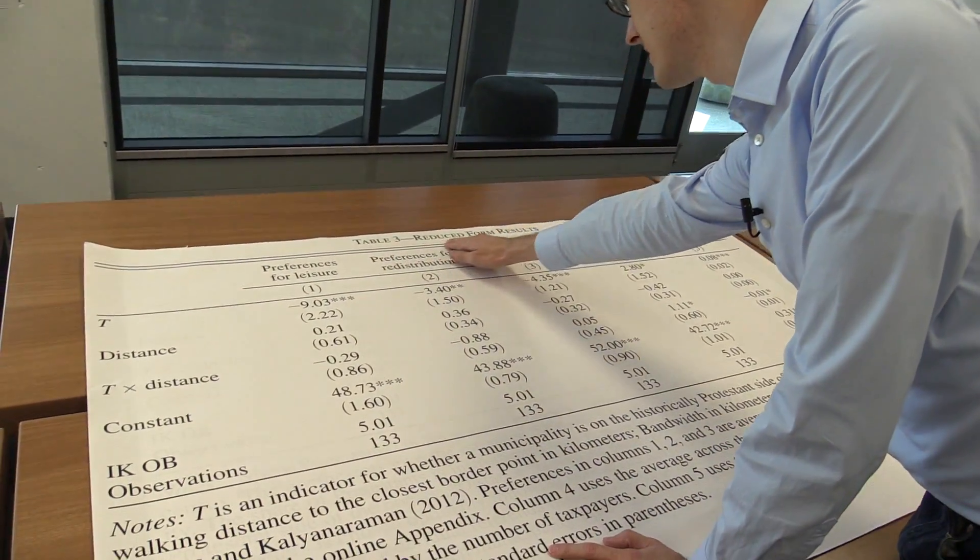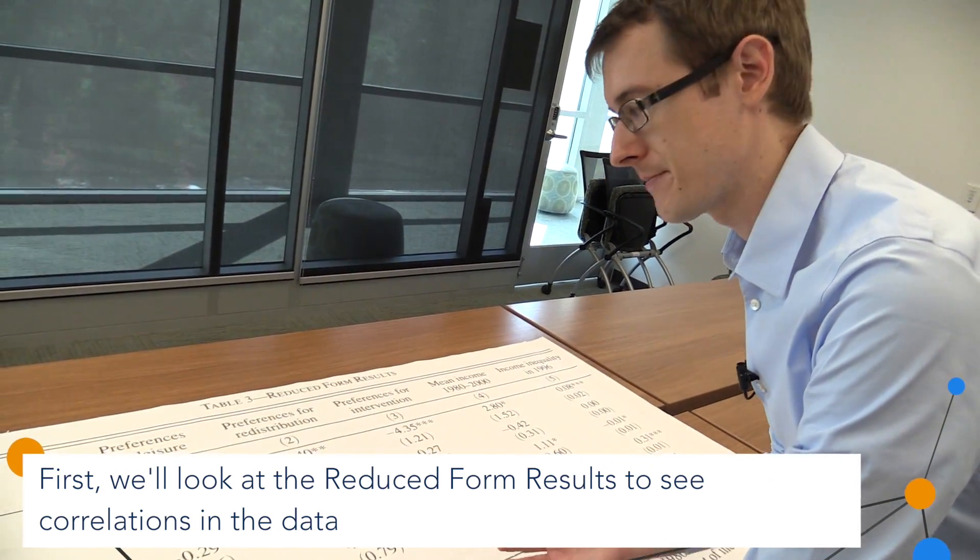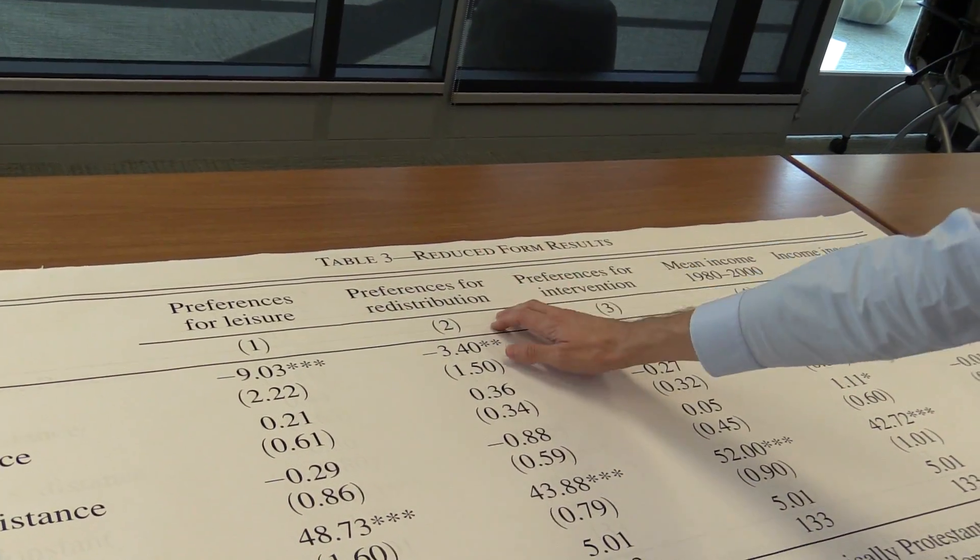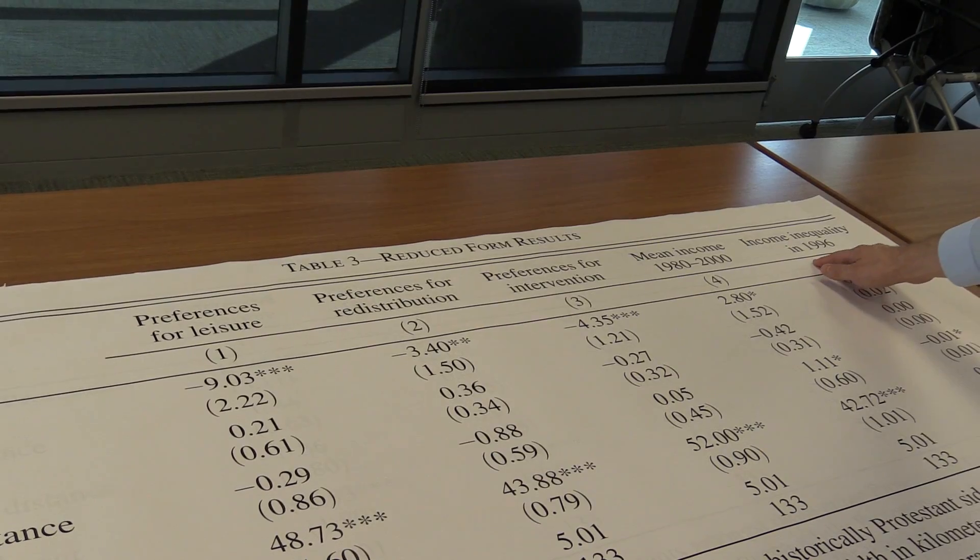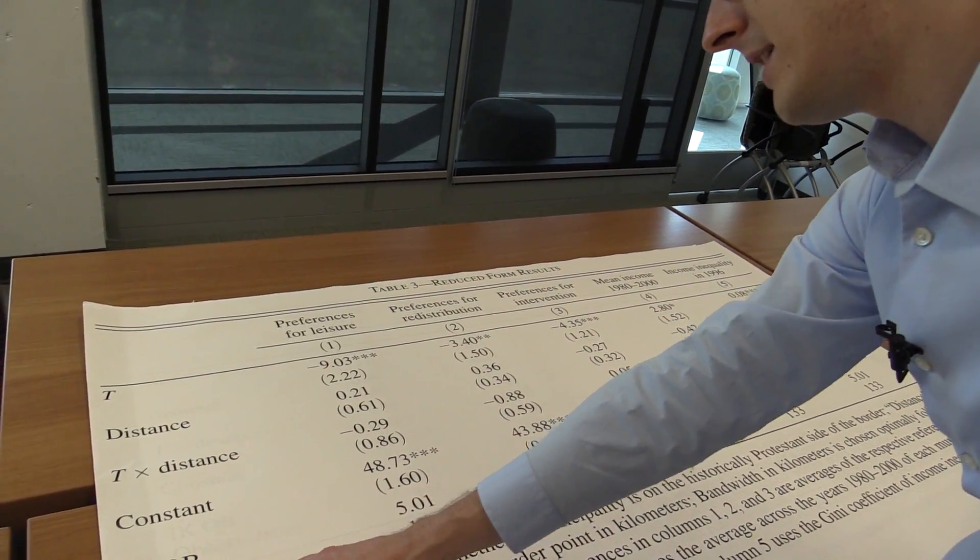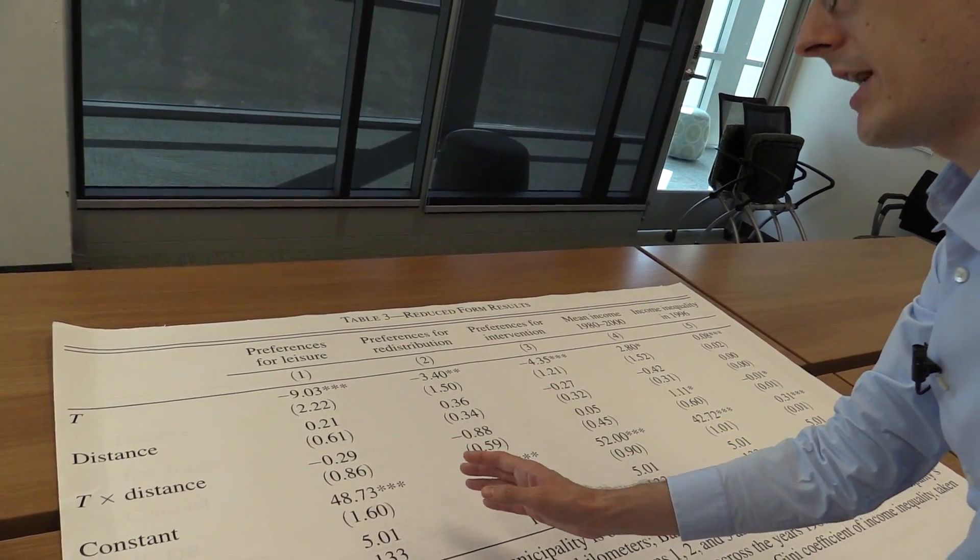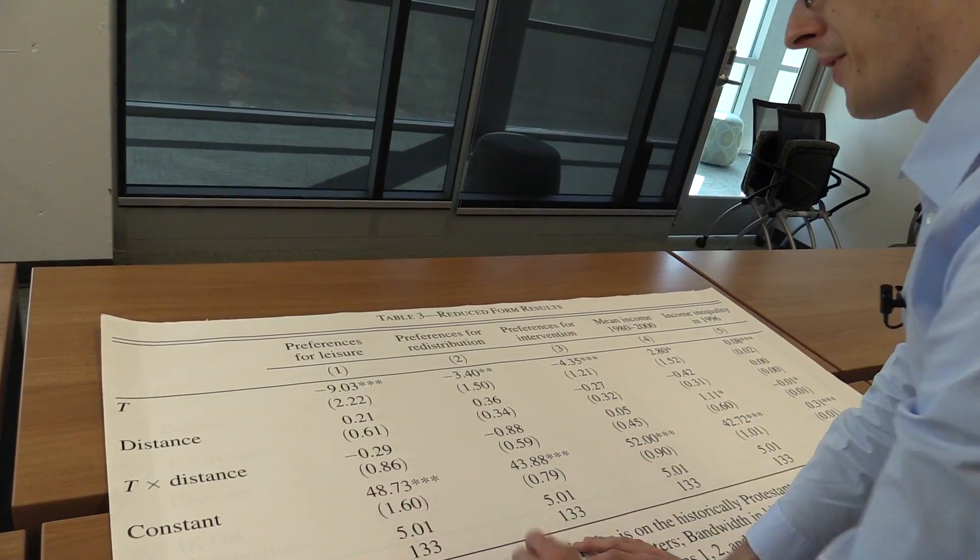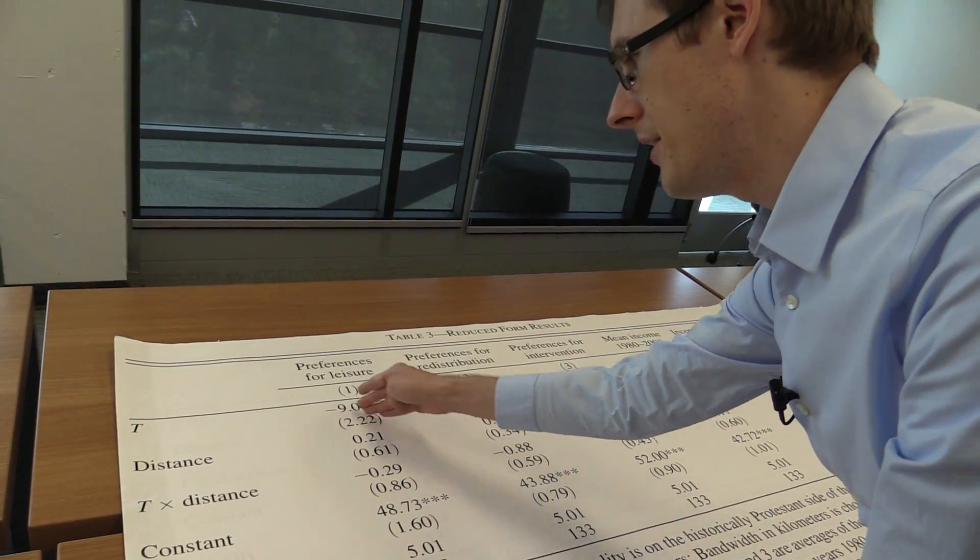So that's what I've got right here. Table three says reduced form results. Remember reduced form just is another way of saying a regression. So they're doing a regression here and they've got five different columns for five different outcome variables: preferences for leisure, redistribution, intervention, that's what we looked at before and then two other outcome variables, mean income and income inequality. Now, if you look at just this first column, we come down here and we see observations 133. So they're doing the same thing that Sandra Black did in her paper. They're going to just restrict our sample size down to the observations that are close to the border, namely within about 5.01 kilometers to the border. So then just for those municipalities, they're going to do a regression of the outcome variable on what side of the border you're on.